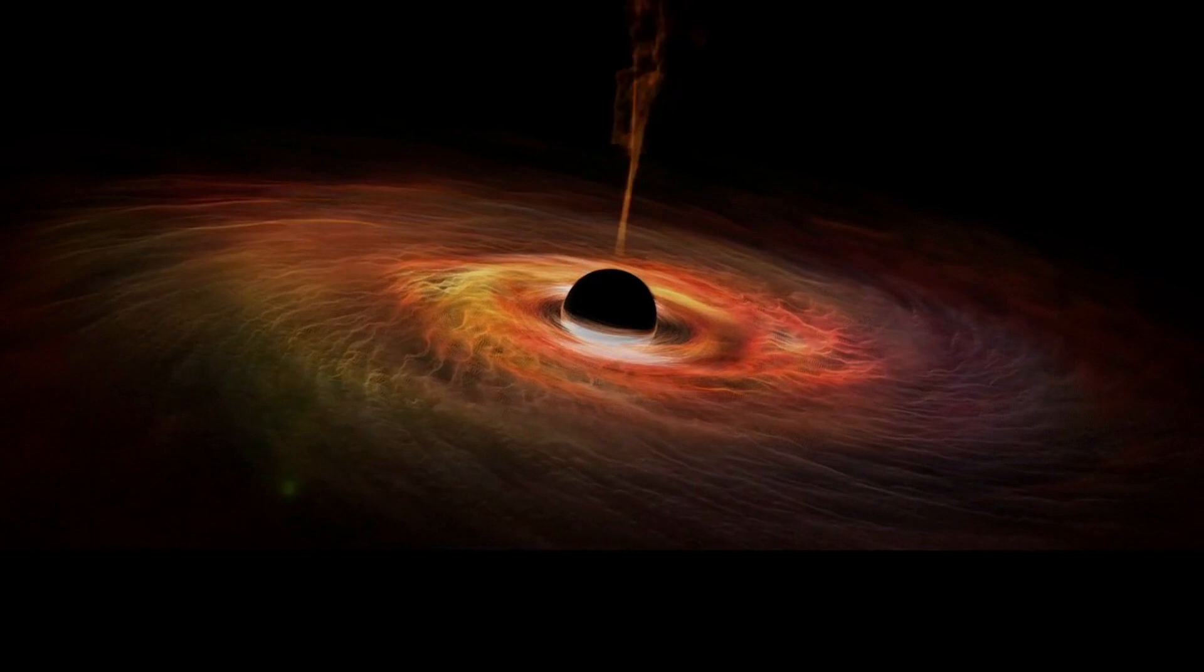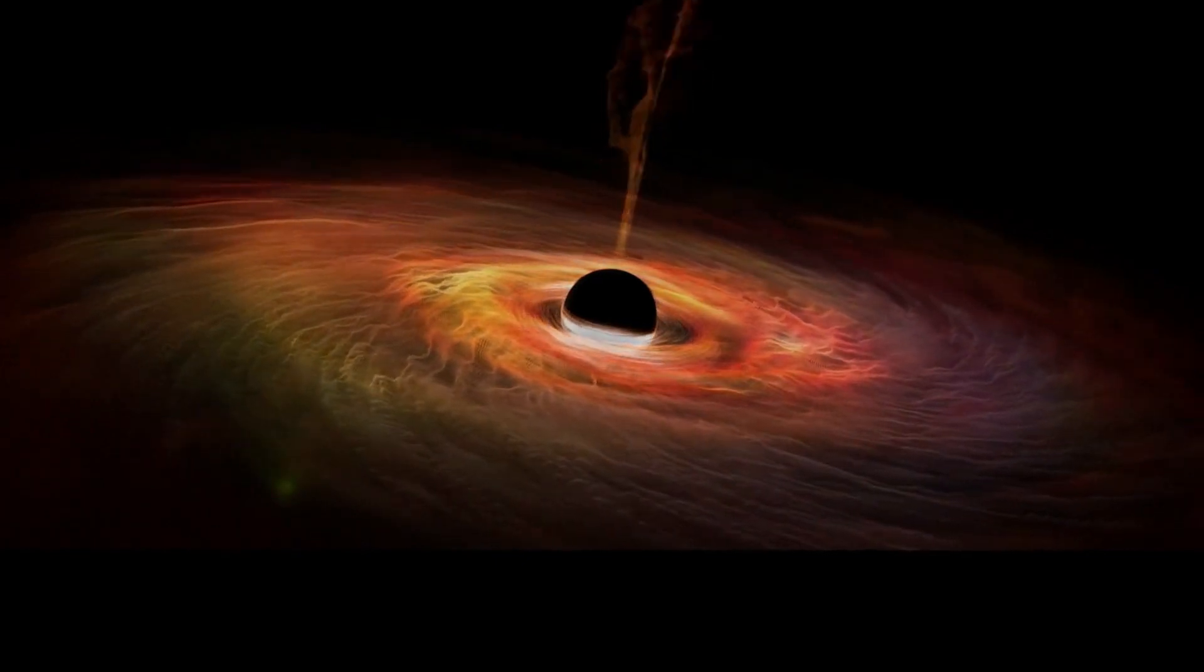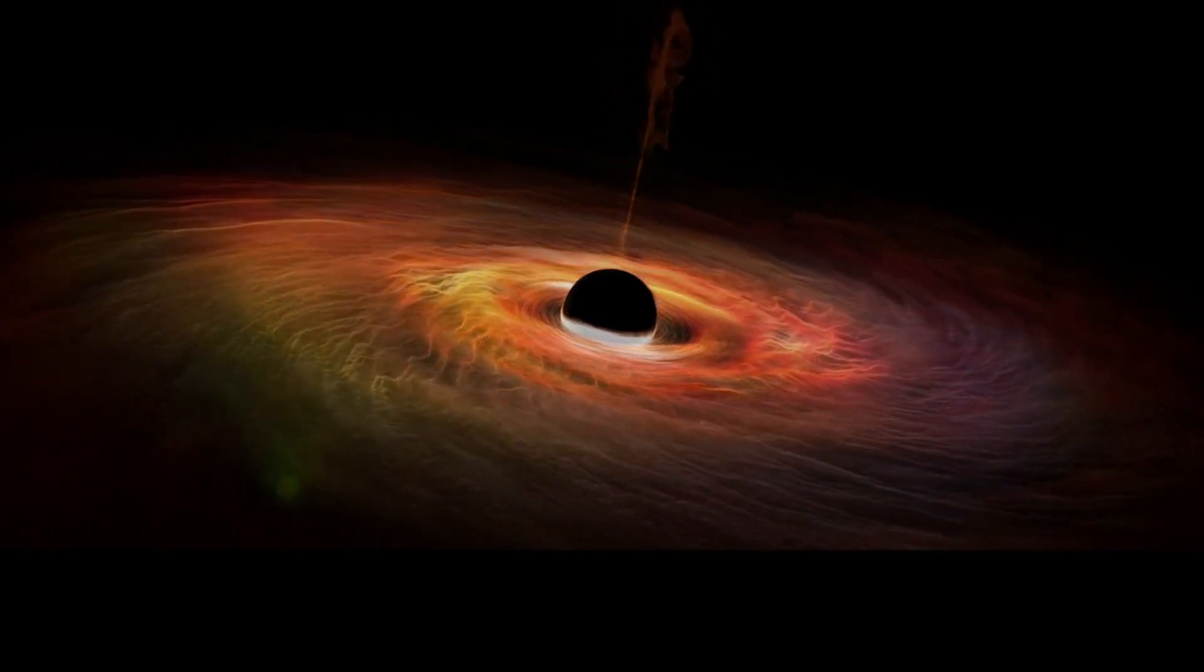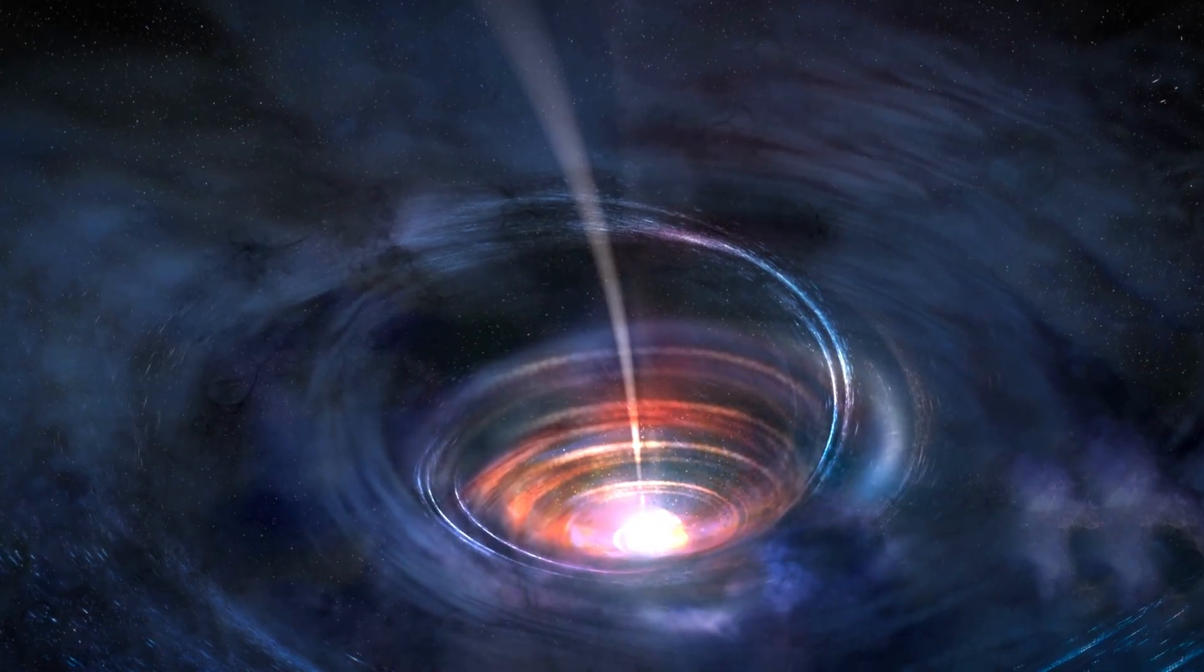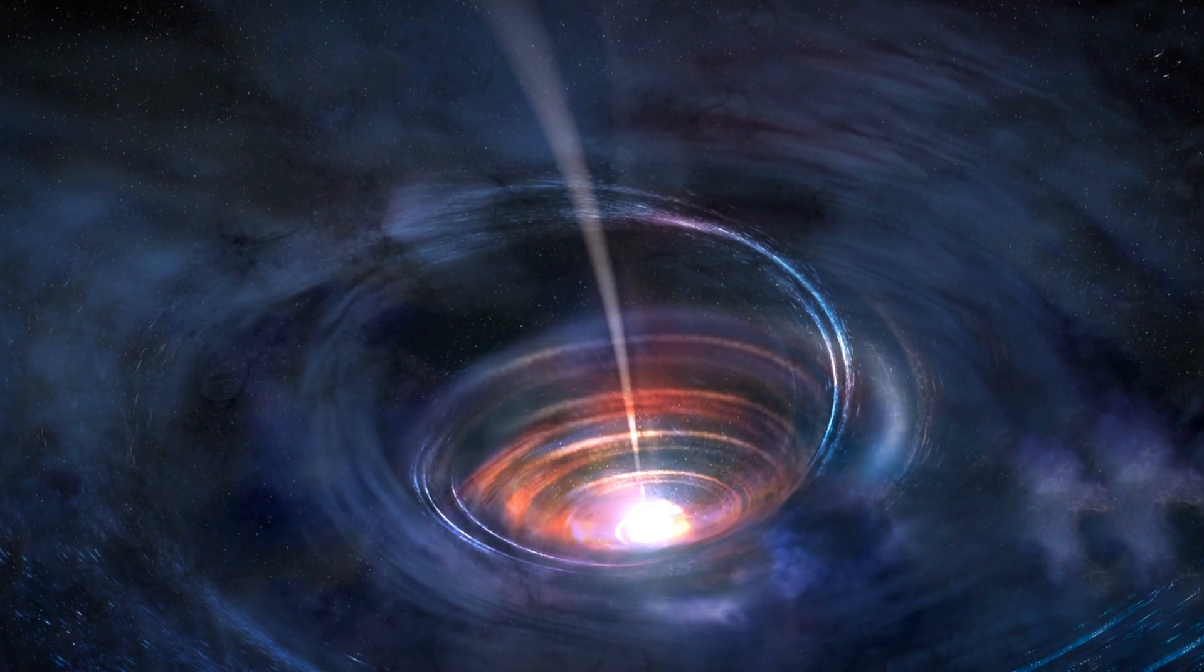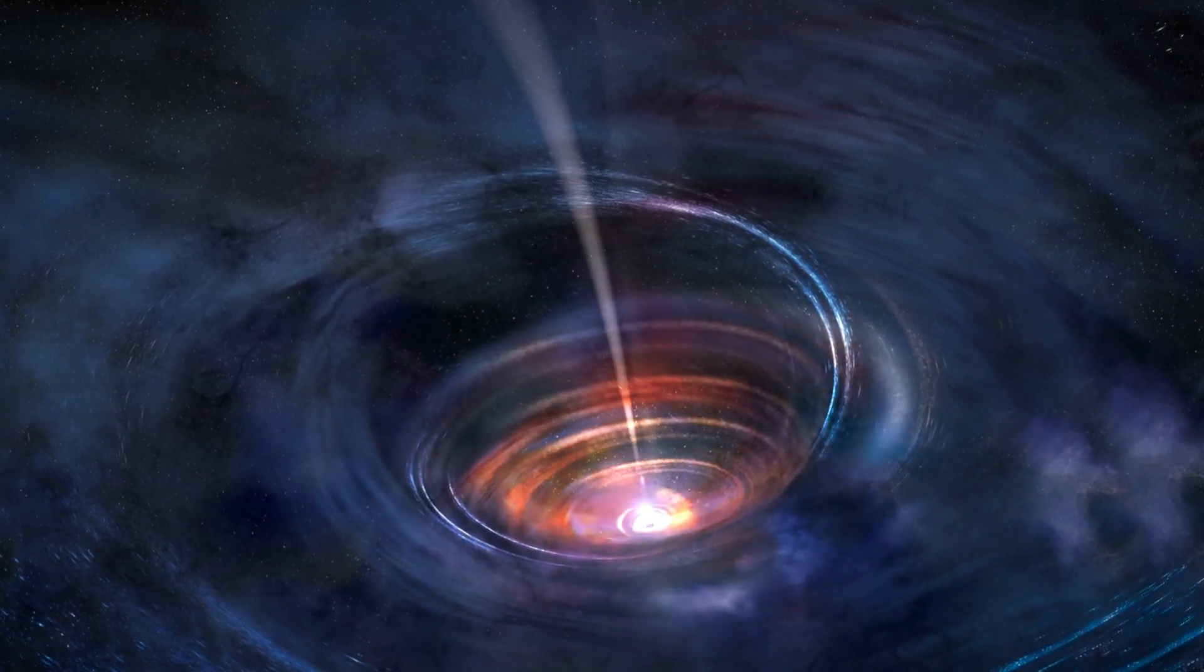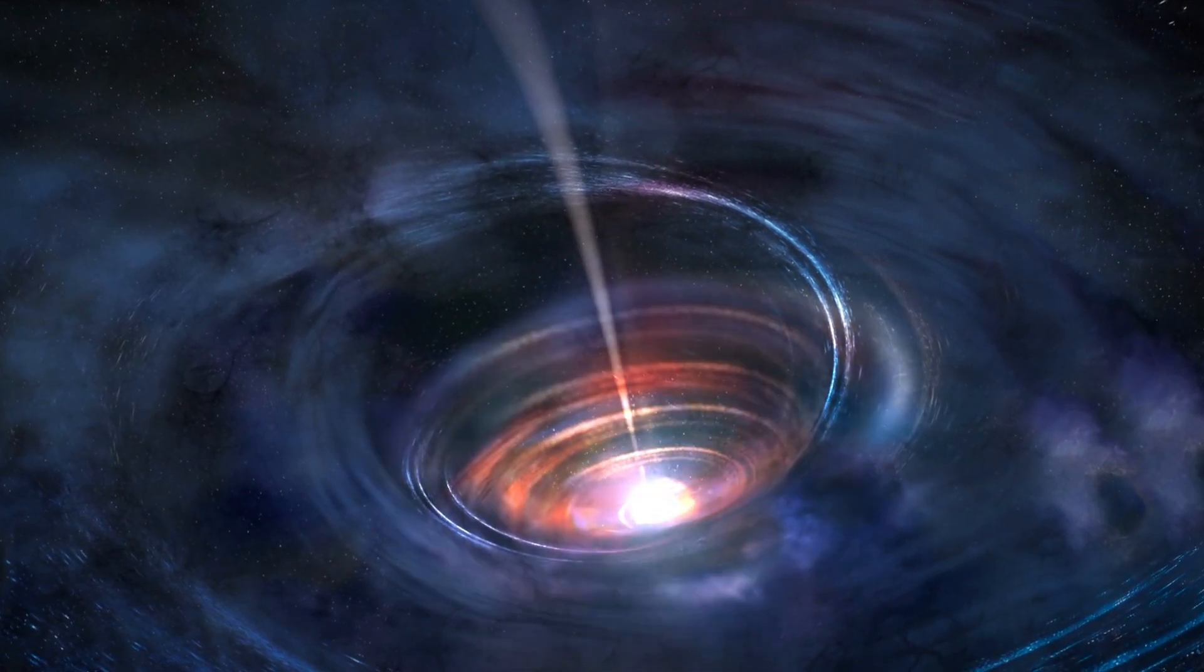Black holes are not merely passive celestial objects; they are voracious eaters, consuming everything that crosses their path. Matter spirals into black holes, forming accretion disks that radiate powerful energies observable from billions of light-years away.